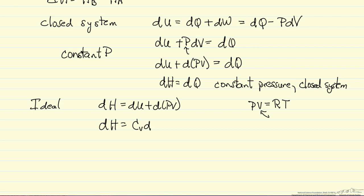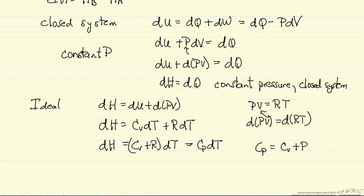For an ideal gas, dU is CvdT, and the d(PV) term is d(RT). Since R is a constant, this is RdT. So dH = CvdT + RdT = (Cv + R)dT. But dH is also CpdT. Therefore, Cp for an ideal gas is Cv + R.